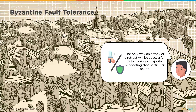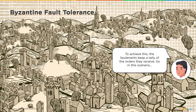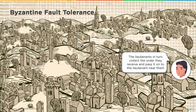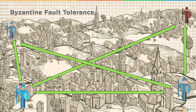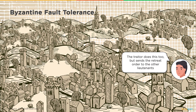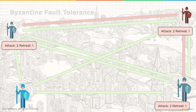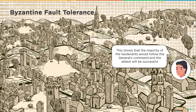The only way an attack or retreat will be successful is by having a majority supporting that particular action. To achieve this, the lieutenants keep a tally of the orders they receive. The general sends the attack order to each lieutenant; they in turn collect and pass the order to the nearest lieutenant. The traitor also passes on orders but sends the retreat command. However, this fails because each lieutenant now has a majority of attack orders and a minority of retreat orders.